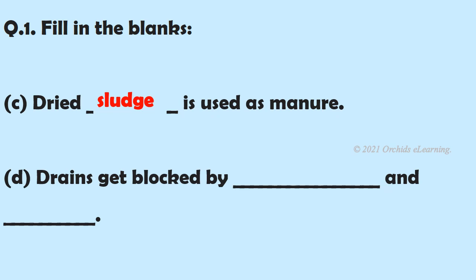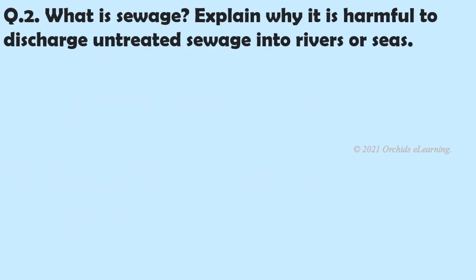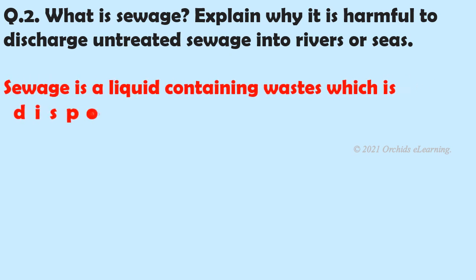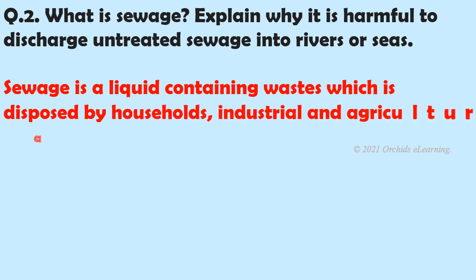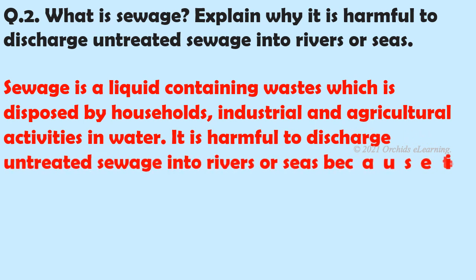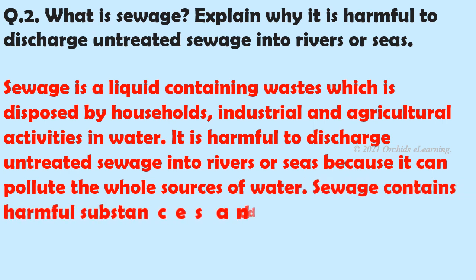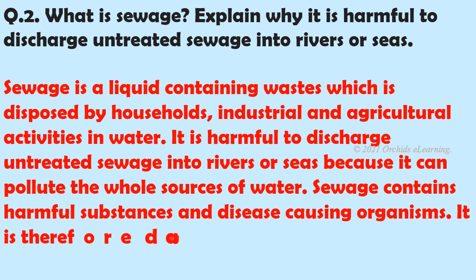What is sewage? Explain why it is harmful to discharge untreated sewage into rivers or seas. Sewage is a liquid containing wastes which is disposed of by households, industrial, and agricultural activities into water. It is harmful to discharge untreated sewage into rivers or seas because it can pollute whole sources of water. Sewage contains harmful substances and disease-causing organisms.